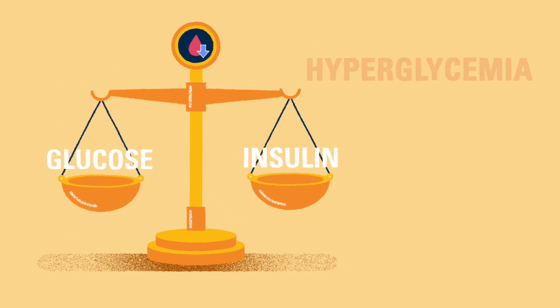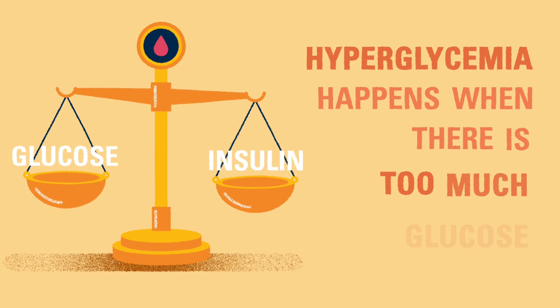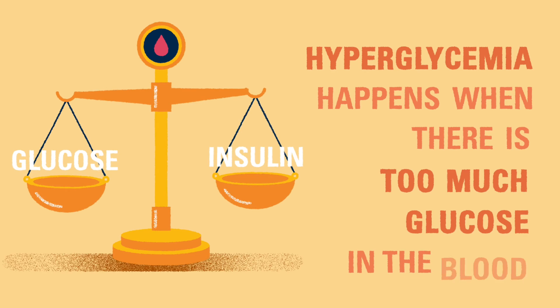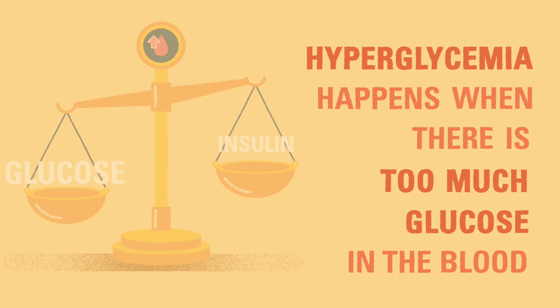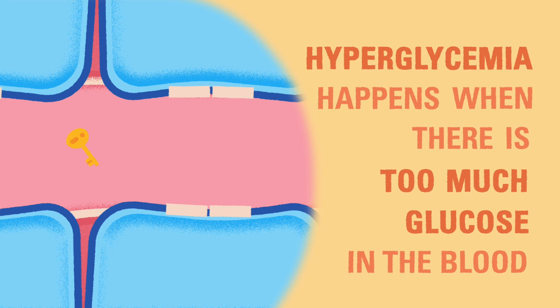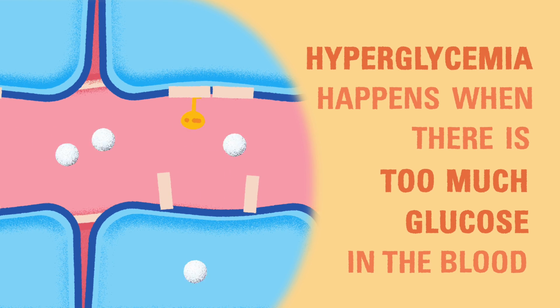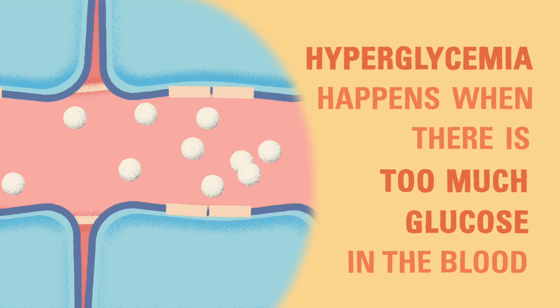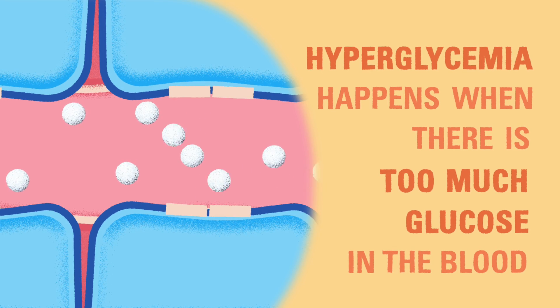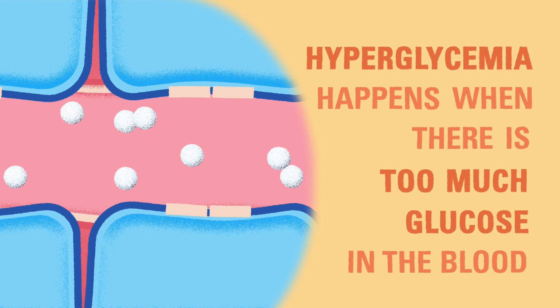Hyperglycemia, or high blood glucose, happens when the body has too much glucose and not enough insulin. Insulin allows glucose into the cells to be used for energy, but if there is not enough, the glucose stays in the bloodstream.